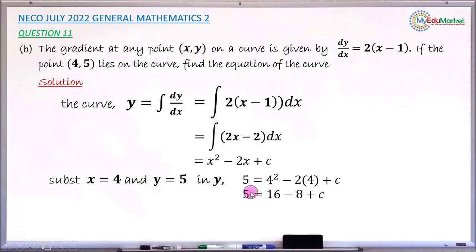And when you now take 8 to the left hand side, you have 5 minus 8. In the end, you now have c equals minus 3.